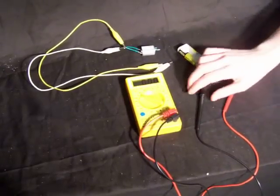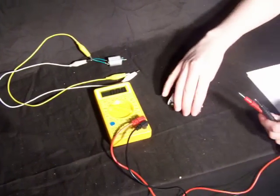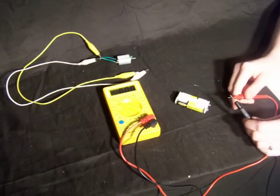Next, take your test probes and touch them to the leads where you wish to measure voltage. In this example, I am touching the leads of a AA battery holder.